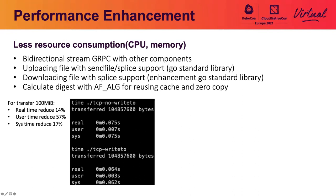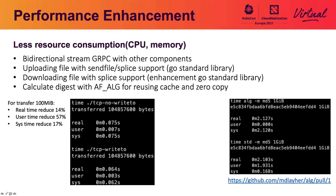Regarding file digest: normally we calculate file digest using the standard library in Golang, which requires the kernel to copy all data to user space. But Dragonfly data is immutable in most cases and always hits the page cache. Using AF_ALG with the Kernel Crypto API, we can avoid copying data from kernel to user space. The result is the same real-time performance but with zero copy to user space.